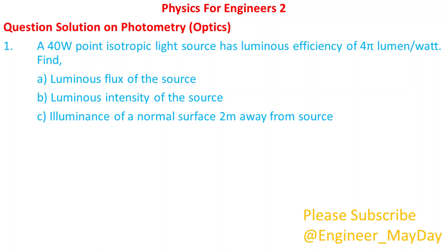A 40 watt point isotropic light source has a luminous efficiency of 4π lumen per watt. Find: A) the luminous flux of the source, B) the luminous intensity of the source, and C) the illuminance of a normal surface 2 meters away from the source.